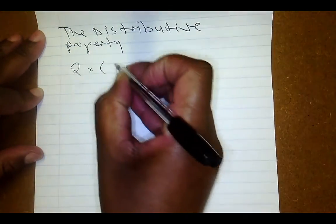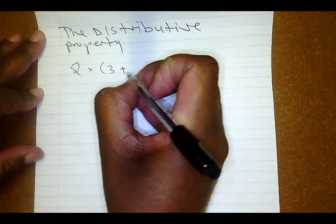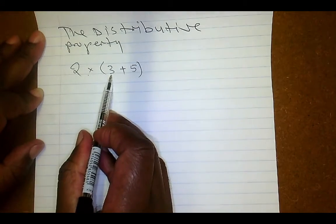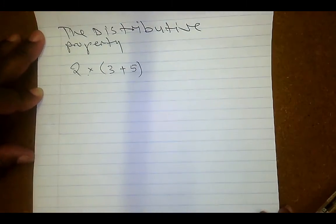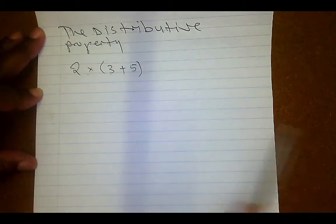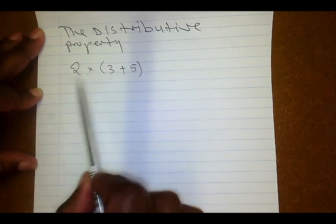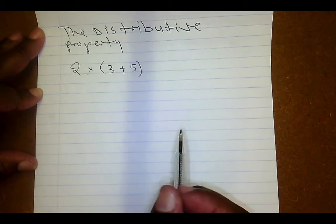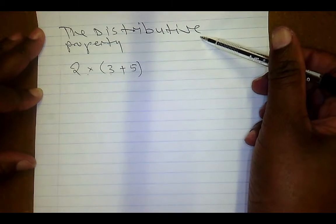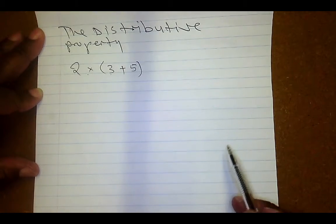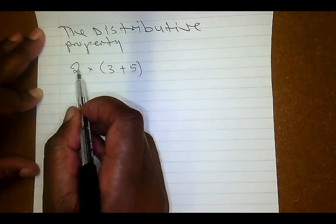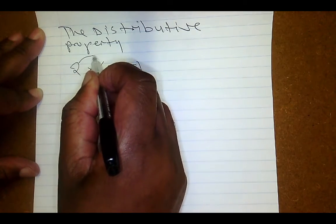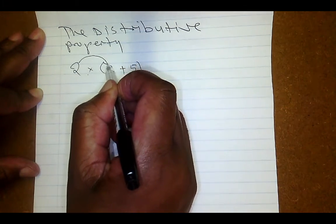Let me show you an example. Suppose we have 2 and we are multiplying 2 by the sum of 3 and 5, so this is 2 multiplied by (3 plus 5). You can simplify what's in the brackets first and then multiply the answer by 2. But if you want to use the distributive property, this is what it says: the 2 should be distributed across the bracket.